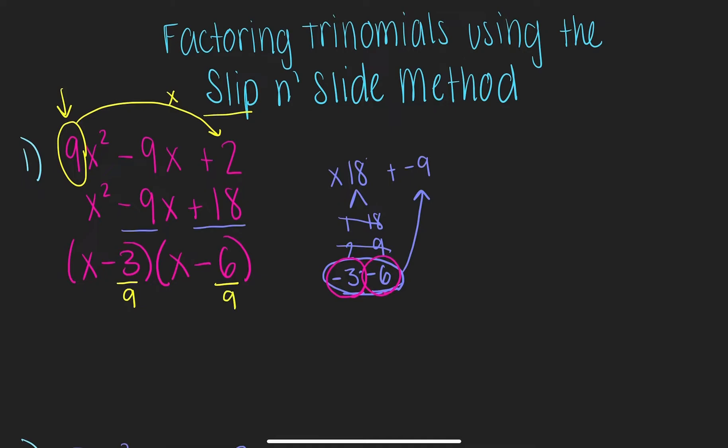Now, as you see, we got fractions, so let's reduce the fractions. 3 ninths, if we divide the top and bottom by 3, that gets us 1 third.